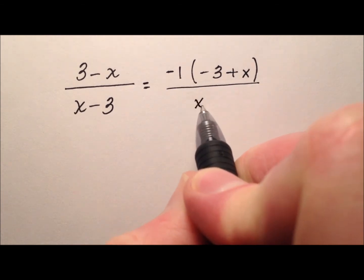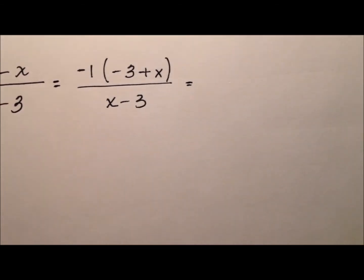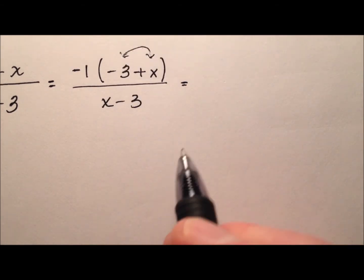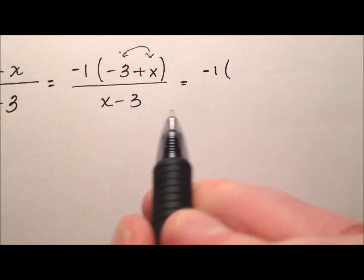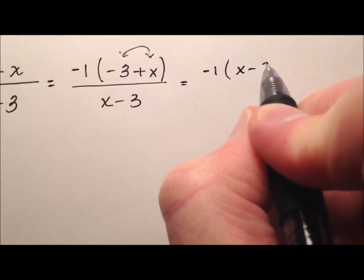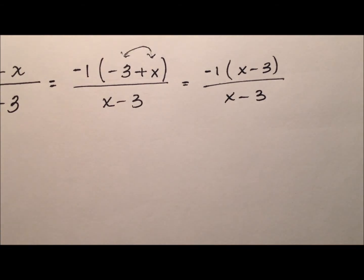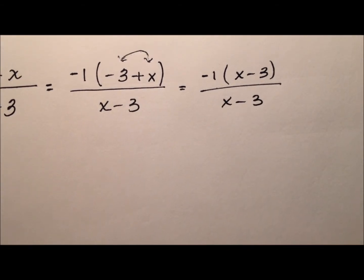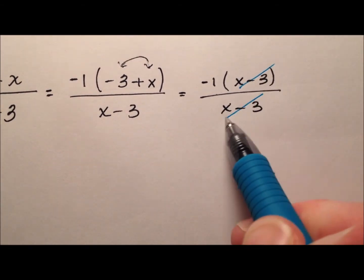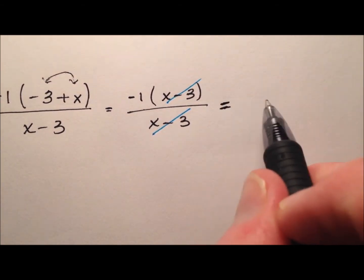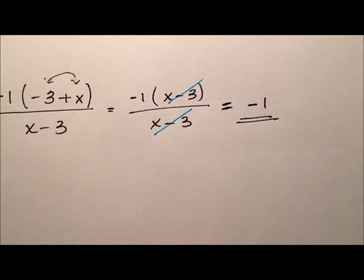My denominator stays the same. So if I go ahead and change the order of these two terms, inside the parentheses I have x minus 3. And on the bottom, x minus 3. So now you'll see that we can indeed cancel them out. So what we end up with is actually negative 1.